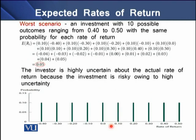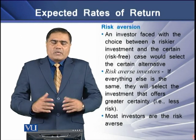Similarly, in a worst-case scenario, an investment with 10 possible outcomes ranging from 0.40 to 0.50 with the same probability for each rate of return yields an expected rate of return of 5%. However, this 5% is derived from 10 possible outcomes, meaning the investor is highly uncertain about the actual rate of return. The investment is very much riskier owing to the higher uncertainty created by 10 possibilities.